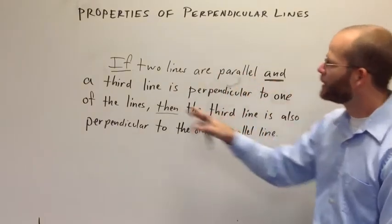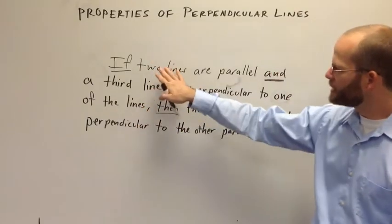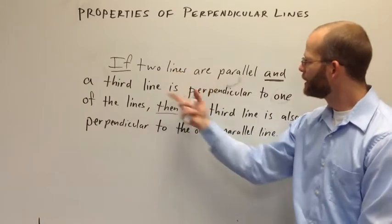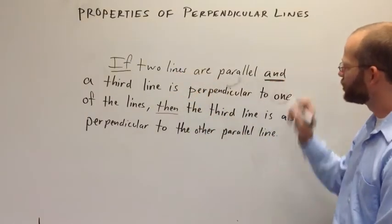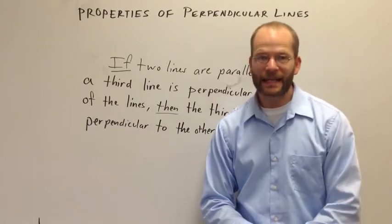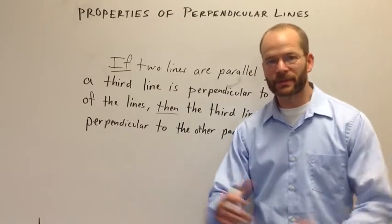It says, and, a third line is perpendicular to one of the lines. So you can see that we have what we might call a compound hypothesis. There are two parts to it. Now this 'and' joins those two parts. You may remember our study of truth tables. When we had an 'and', it meant that both conditions had to be true in order for the whole to be true.